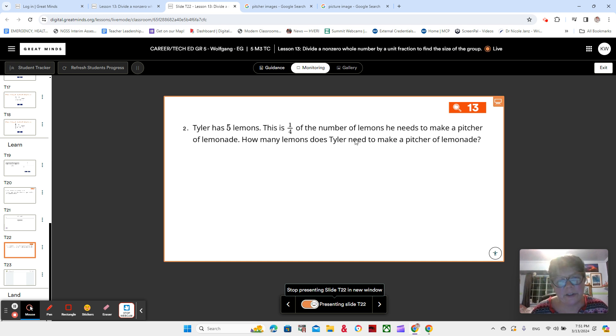And what can we draw? Well, he has five lemons. Lucky Tyler, he has a good lemon tree outside his house and he has five lemons. So we have one box with five lemons in. Let's start there. This is one fourth the number of lemons he needs to make a pitcher of lemonade. So like we did in our last one, let's draw a number line. And this is one fourth, right? One fourth. Excellent.